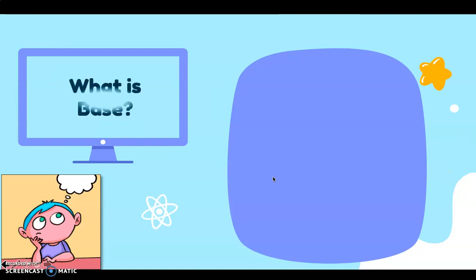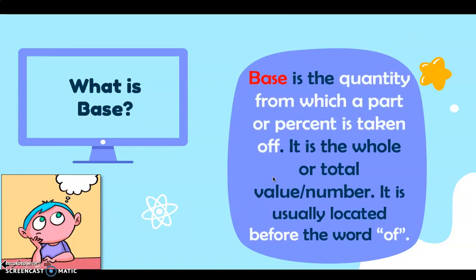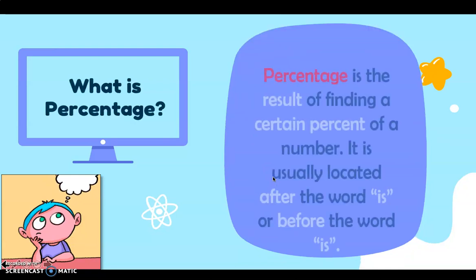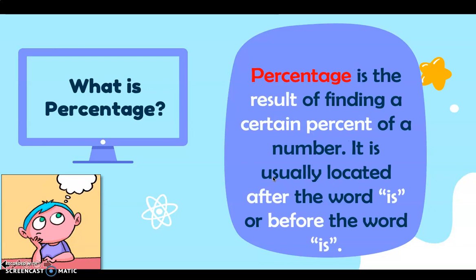The base is the quantity from which a part or percent is taken. It is the whole or total value or number, and it is usually located before the word 'of.' For percentage, it is the result of finding a certain percent of a number, and it is usually located after or before the word 'is.'